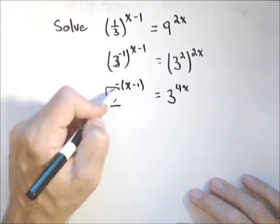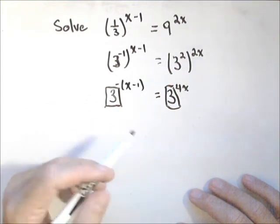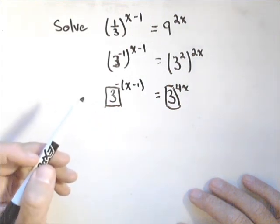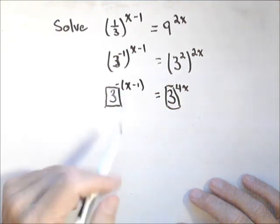Now, exponential functions are what we call one to one. For each input there's a unique output, but also for each output there's a unique input, which means if the bases are the same, the exponents have to be the same.